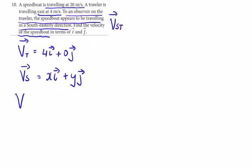The velocity of the speedboat relative to the trawler, we know velocity of S minus velocity of T, so let's plug that in. It's x minus 4 in the i direction plus just y minus 0 in the j direction. And this velocity of the speedboat relative to the trawler appears to be in a southeasterly direction.